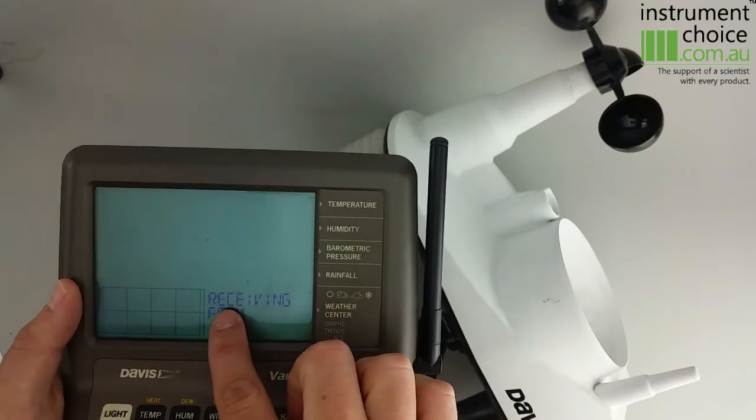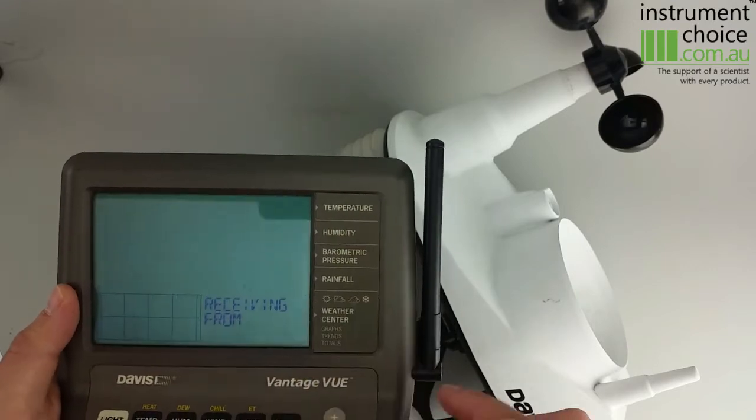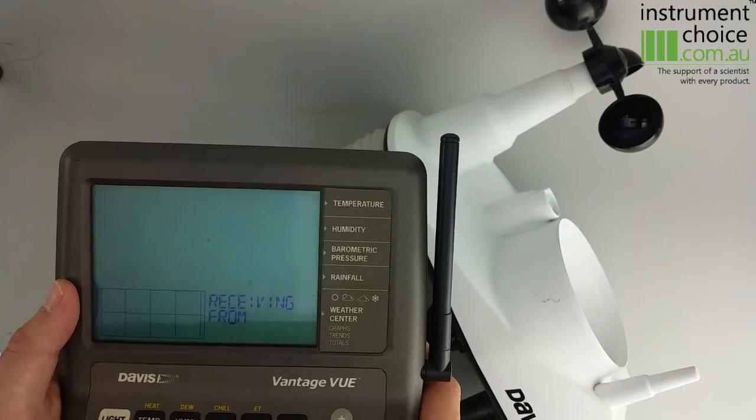Our next screen will show us which transmitters the console can see. In this particular case, because we know it's from Transmitter 6, we're going to skip this screen and go straight through to setting that up.